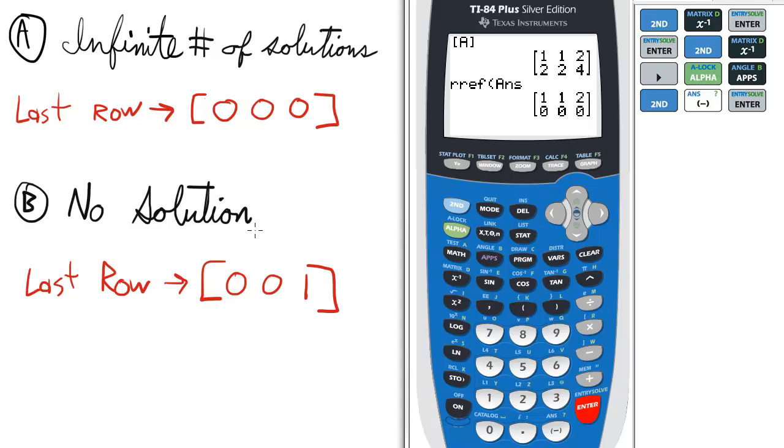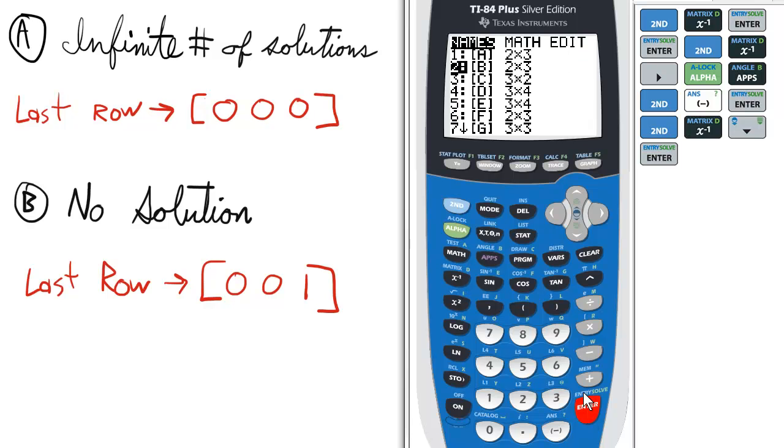The opposite is no solution. Let me show you a matrix that looks like that. Matrix B,